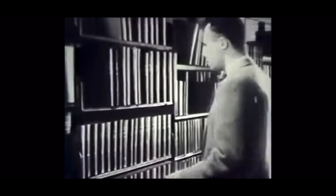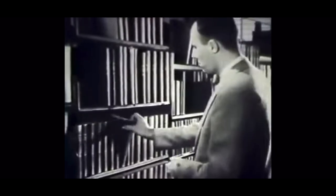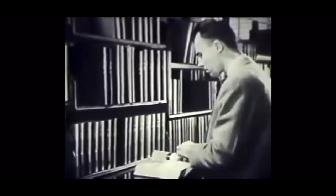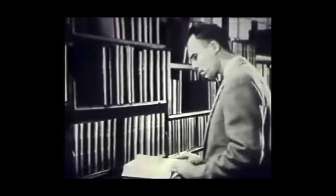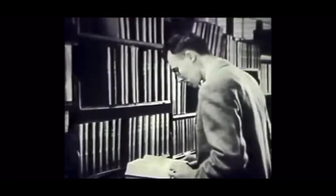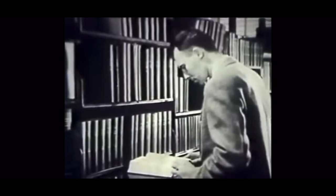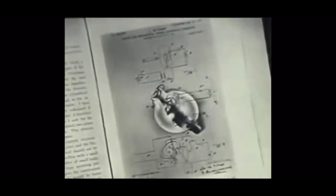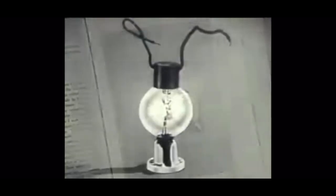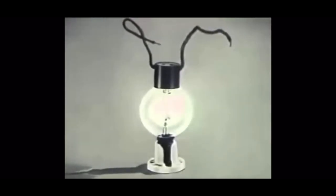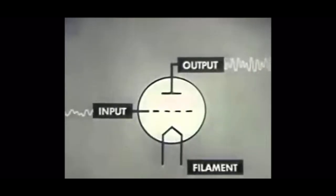To grasp fully the importance of these new members of the electronic family, let's recall the wonders made possible by the high vacuum tube — the common radio tube. The roots of the electronic age reach back into the early years of our century. In 1907, Dr. Lee de Forest discovered that a grid of fine wire placed between a filament and a metal plate in a vacuum tube could control the flow of electrons between the filament and plate, and the tube could be made to amplify as well as detect electrical waves.